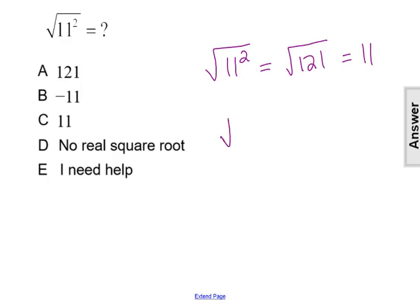You also can think that the square root and the squared exponent are inverse operations, so they undo each other. So you would get 11 right from the beginning if you cancel out those symbols.